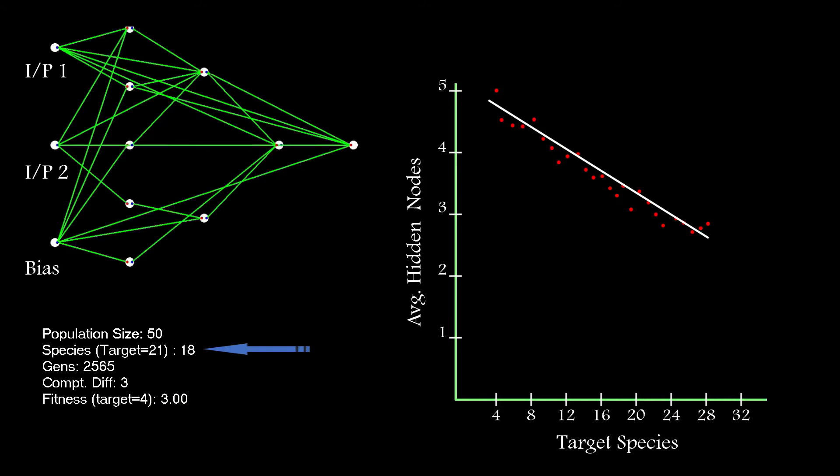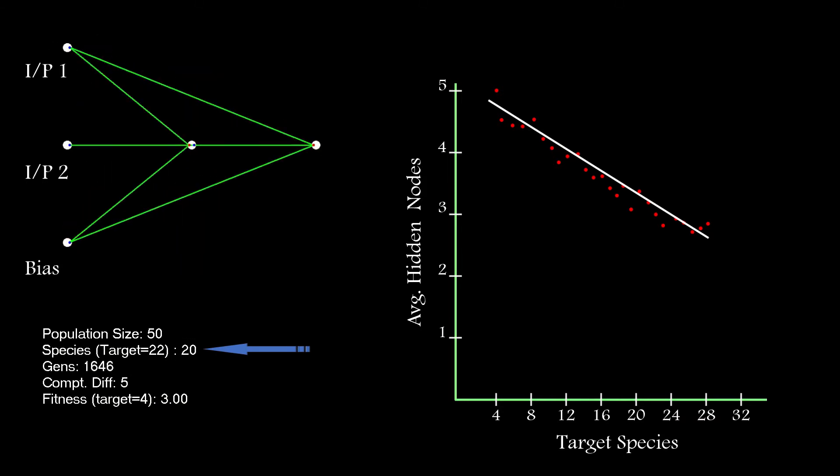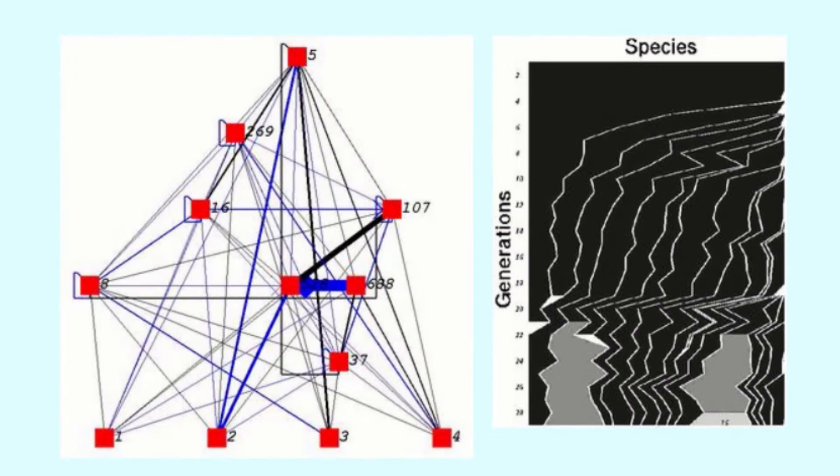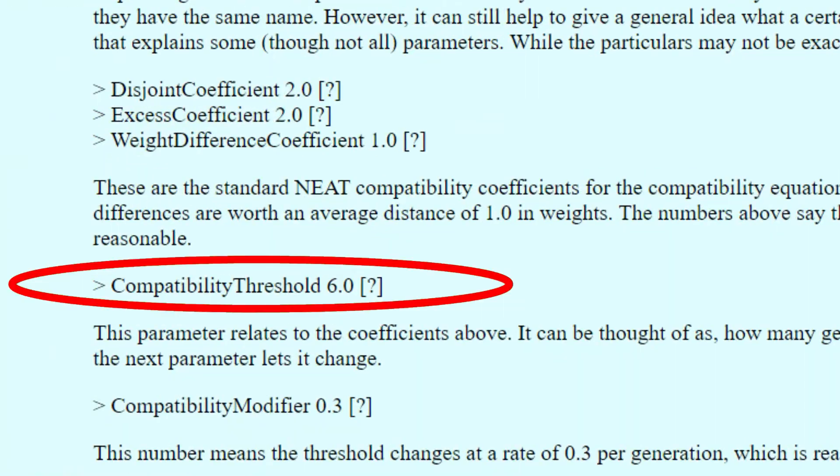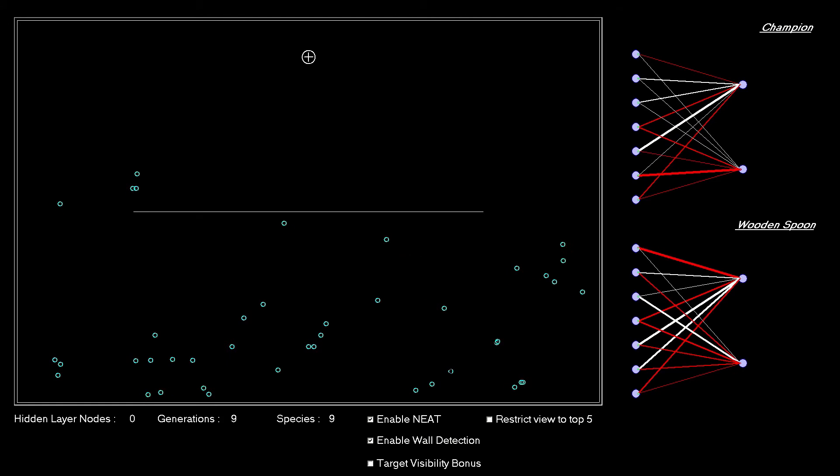The number of species will vary and the threshold for species inclusion will adjust to try and keep it on target. It's exactly the same approach that Ken details on his website. My implementation works fine, but it wasn't achieving the same low hidden nodes average that Ken was achieving.